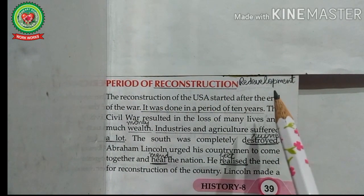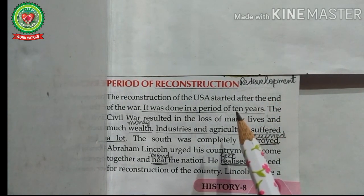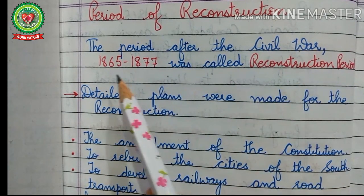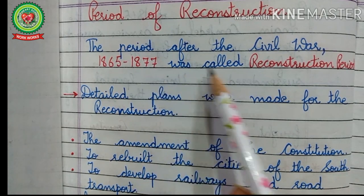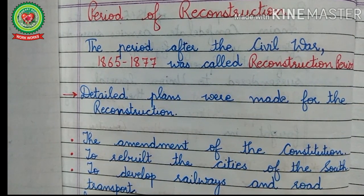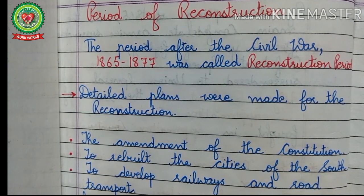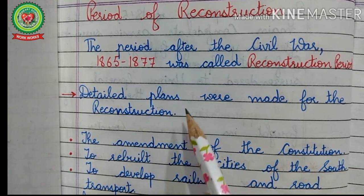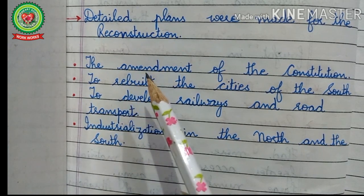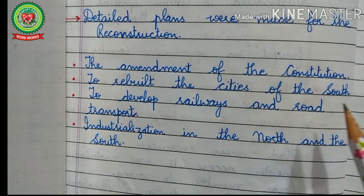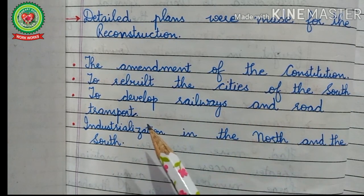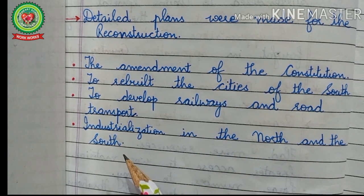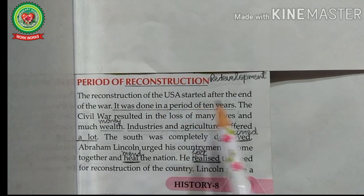The next topic is the period of Reconstruction — reconstruction means redevelopment. Before reading, let us discuss the main points. The period after the civil war, from 1865 to 1877, was called the Reconstruction period. Reconstruction refers to the period immediately after the civil war when several United States administrations sought to reconstruct society in the former Confederate states, in particular by establishing and protecting the legal rights of newly freed slaves. Detailed plans were made including the amendment of the Constitution, rebuilding cities of the south, developing railways and road transport, and industrialization in the north and the south.